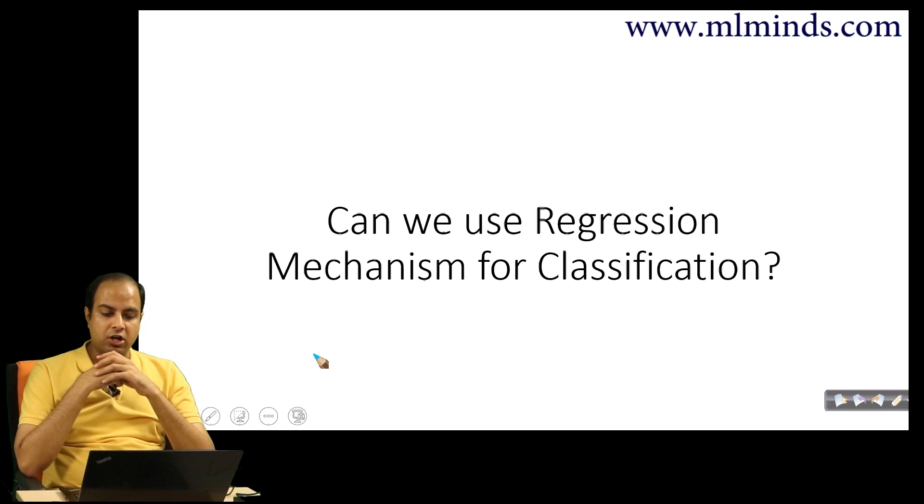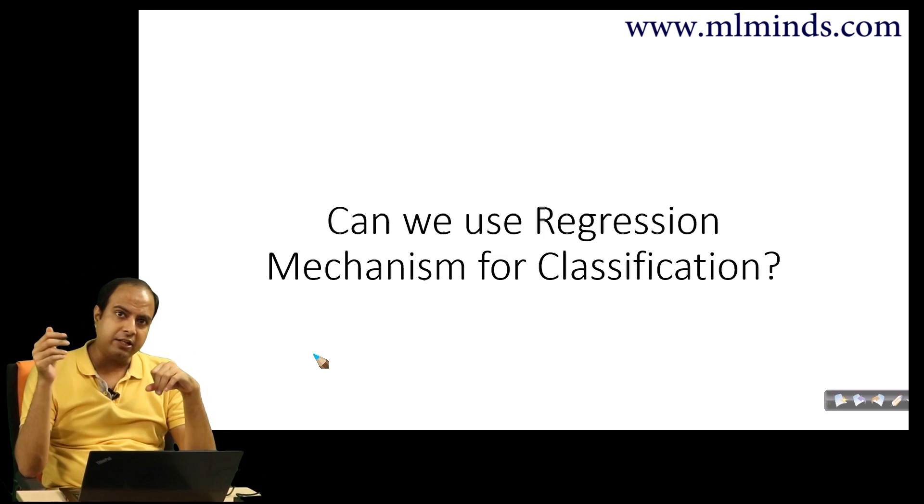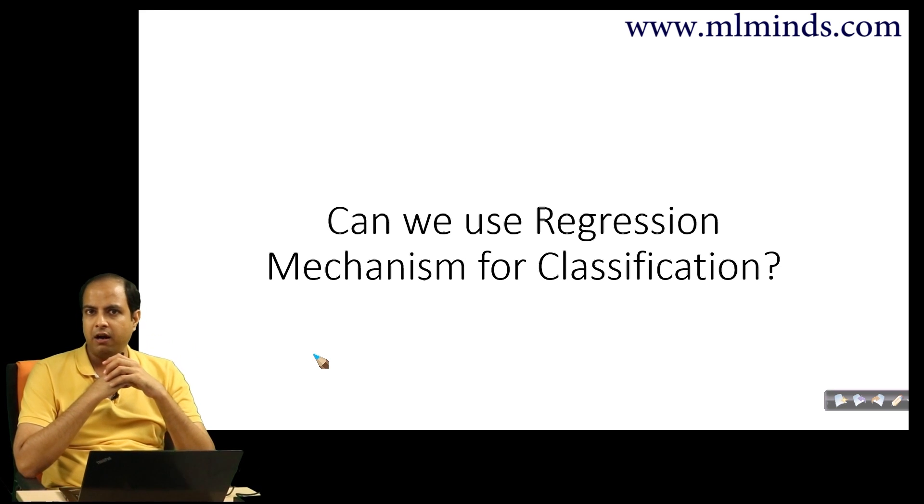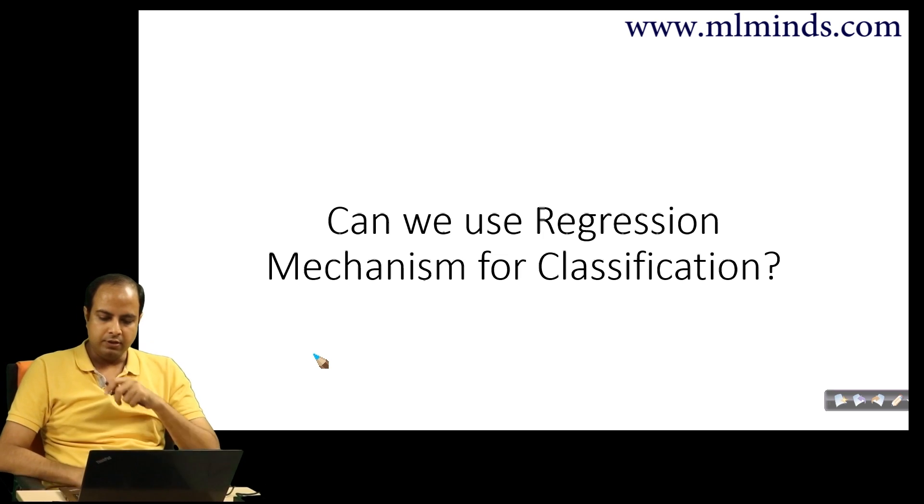In the next video, I'll talk about: Can we really use regression mechanism for classification the way we did? Why did we require that sigmoid curve? Why can't linear regression just work here? After all, we are just trying to predict a number between 0 and 1. Linear regression should also have been able to do the same job. Then why require logistic regression? We'll talk about that in the next video.